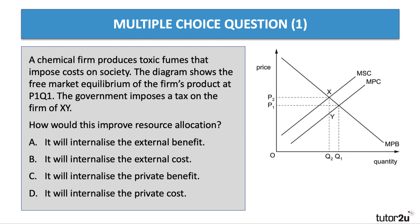Question one. This is obviously a pollution tax — a Pigouvian tax — and it's designed to internalize the externality. Can you see the diagram? It shifts the costs up to reflect the external costs of production and hopefully takes output towards the social optimum of Q2 and price P2.